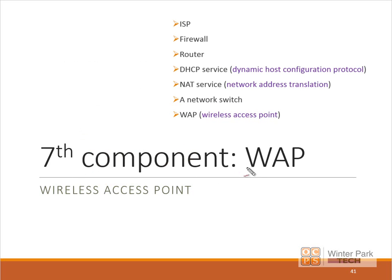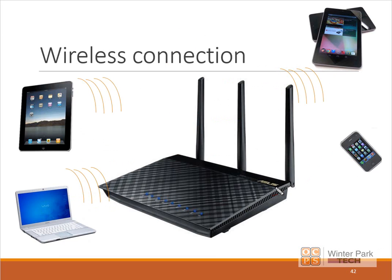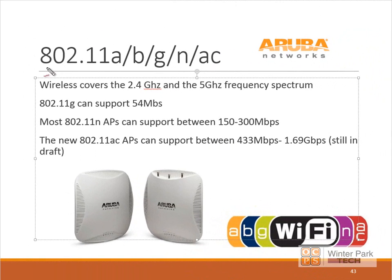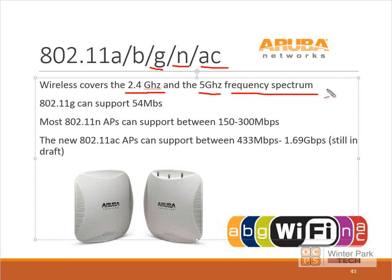Our seventh logical component is the WAP, the Wireless Access Point. Wireless functionality in today's home is critical with tablets, notebooks, laptops, Android phones, and iPhones — we're primarily connecting to our home network via wireless. You need to start gaining an understanding of the various 802.11 standards, especially G, N, and today's AC. The AC standard is still in draft, but we're already seeing production-type wireless access points designed around the draft standards. We're using the 2.4 GHz and 5 GHz frequency spectrum, and we'll go into more detail in Network Plus.